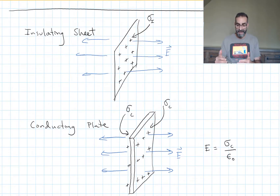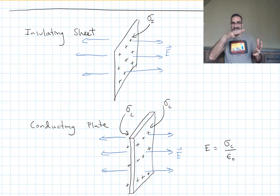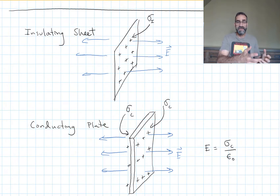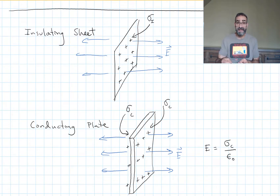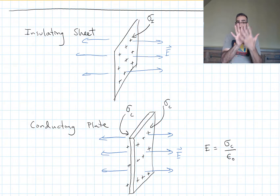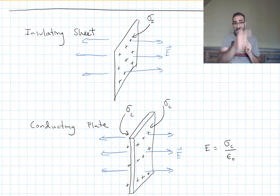It looks like we're off by a factor of two from an insulator to a conductor. But really, if you're outside looking in at this sheet of charge, you don't care whether it's an insulator or a conductor. If there's a total of 10 coulombs per square meter, you should measure the same electric field. If sigma_conductor equals half the sigma_insulator, then the total charge per square meter is the same. Half is on one side of the conductor and half on the other, but the total would be the same as on the insulator — giving the exact same electric field.